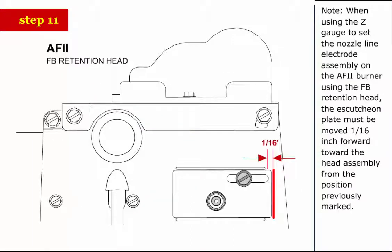Note: When using the Z gauge to set the nozzle line electrode assembly on the AF2 burner using the FB retention head, the escutcheon plate must be moved 1/16 inch forward toward the head assembly from the position previously marked.